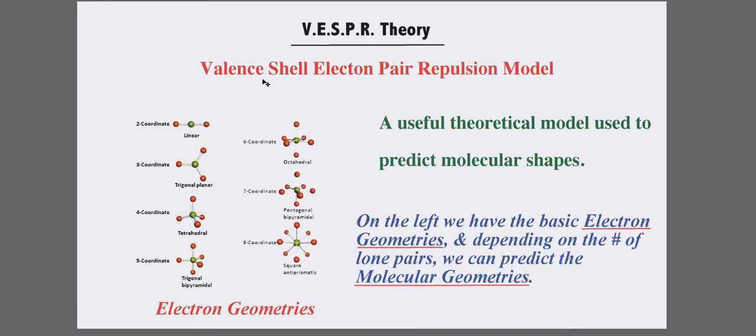VSEPR stands for Valence Shell Electron Pair Repulsion Model. That's quite a mouthful, so people just use VSEPR. If you say VSEPR everybody knows what you're talking about. Basically, it's a useful theoretical model used to predict molecular shapes.